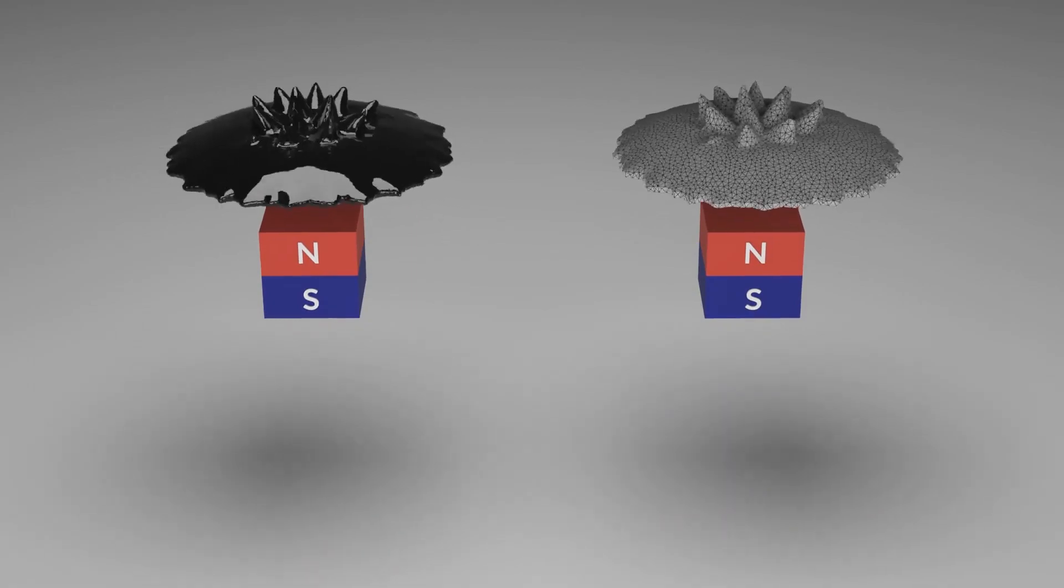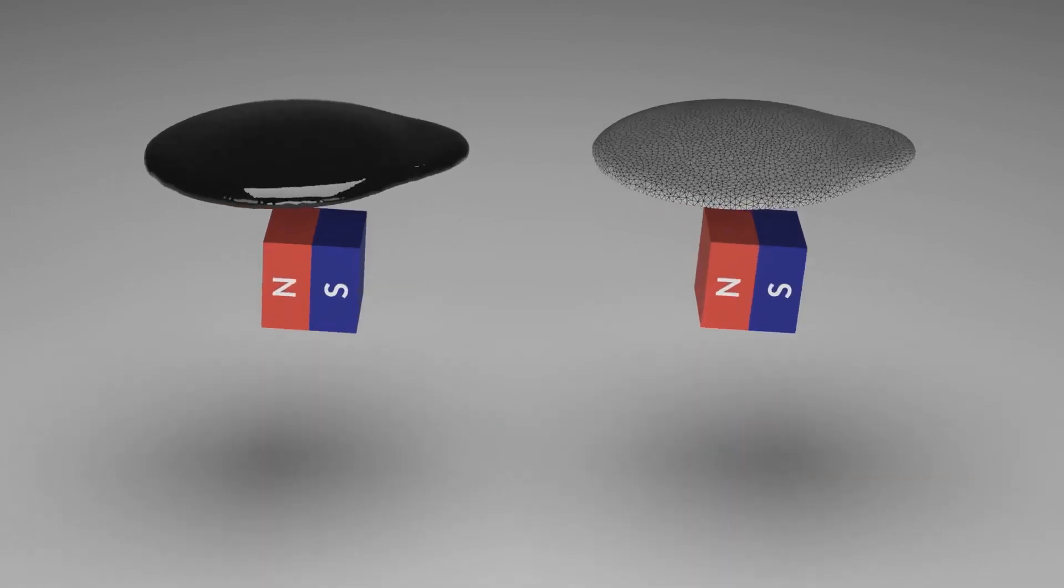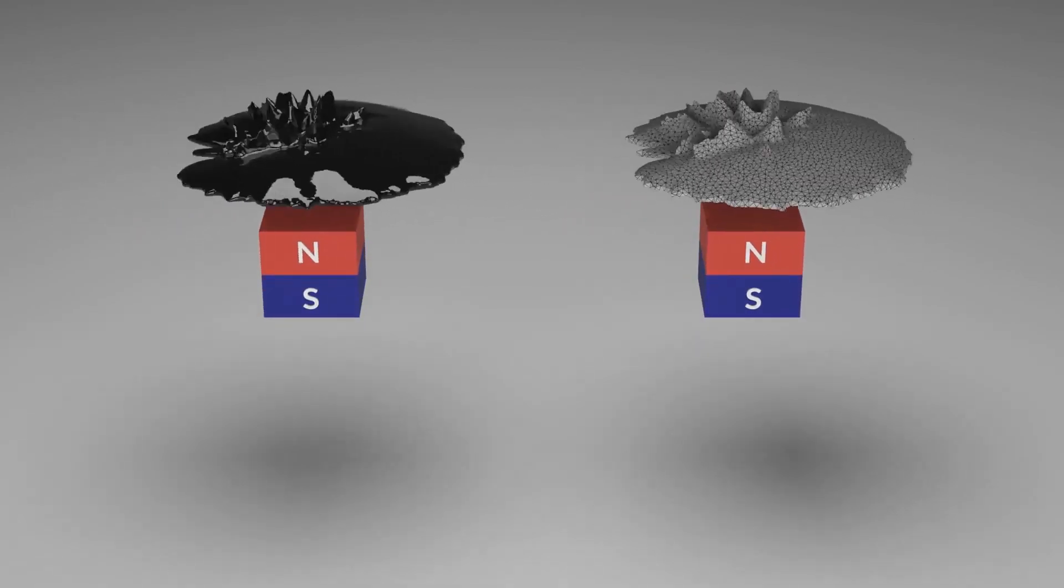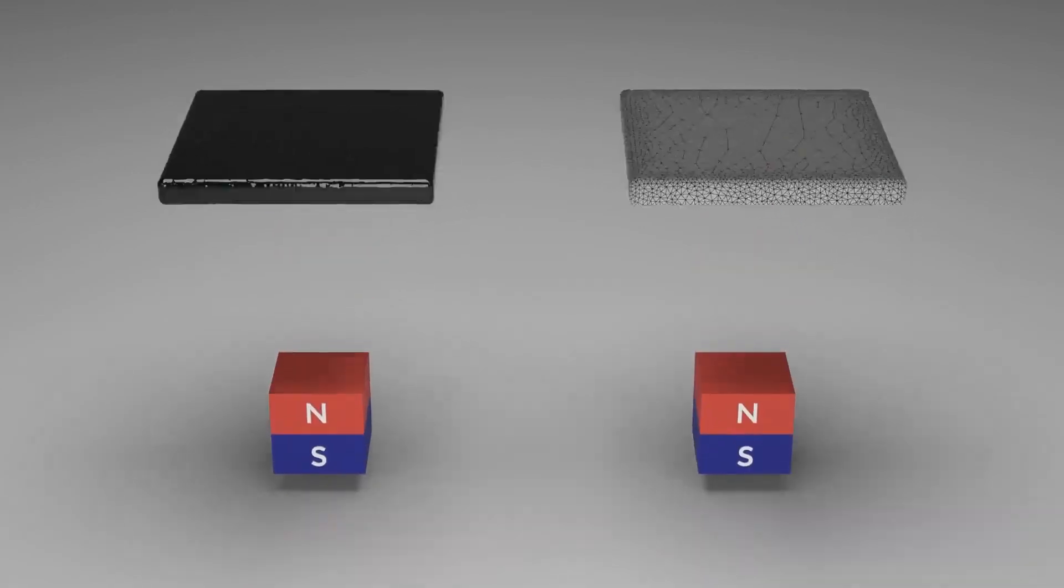In this scene, a magnet approaches the fluid, leading to the formation of spikes. As demonstrated here, the orientation of the magnet is relevant.